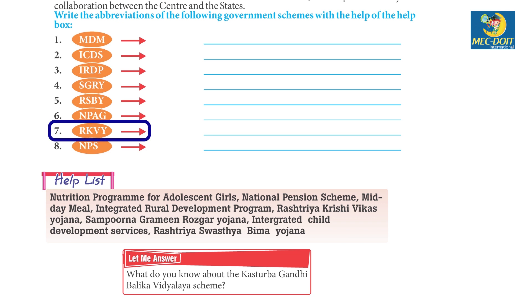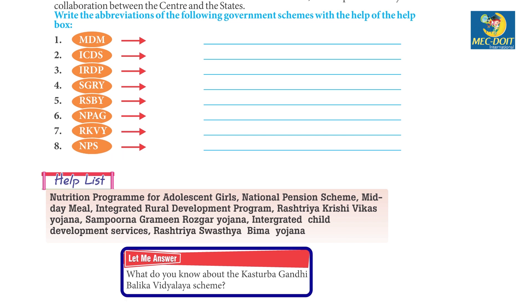7. RKVY. 8. National Pension Scheme. Now, what do you know about the Kasturba Gandhi Balika Vidyalaya Scheme?